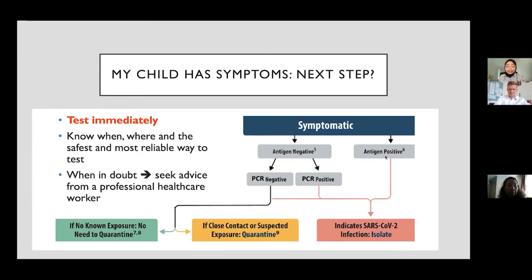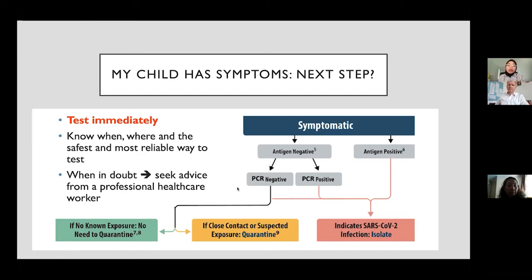If a child or person has symptoms, does the antigen test, and it's positive, then most likely — in a situation where COVID cases are rising — they have COVID and need to isolate. If a person tests negative but there is obvious contact with someone who tested positive, further testing is needed. If there is no exposure and they test negative with PCR, they do not need to quarantine.